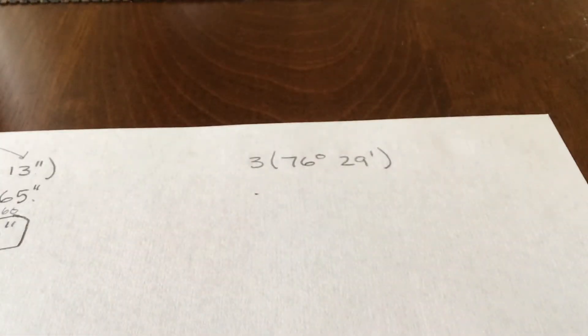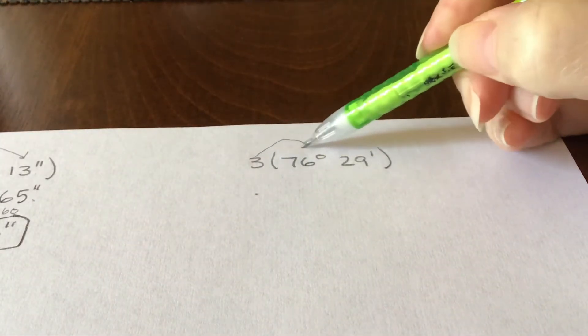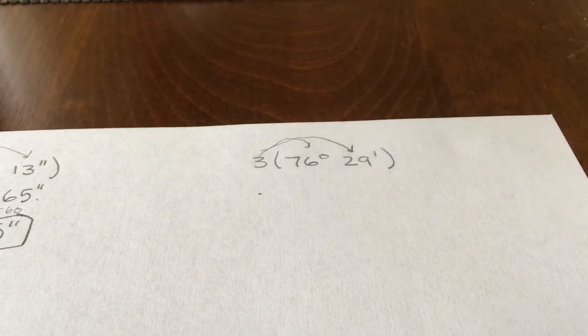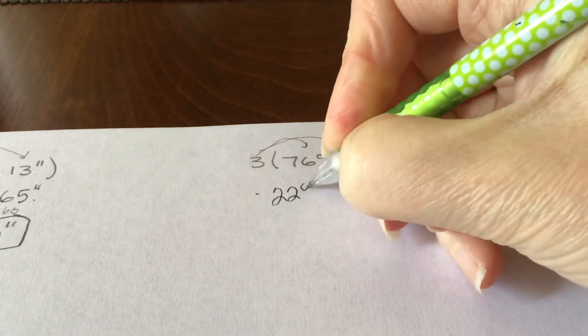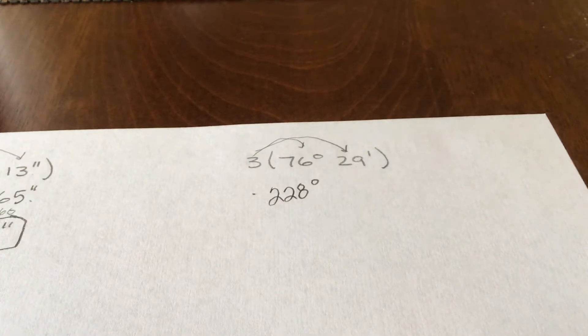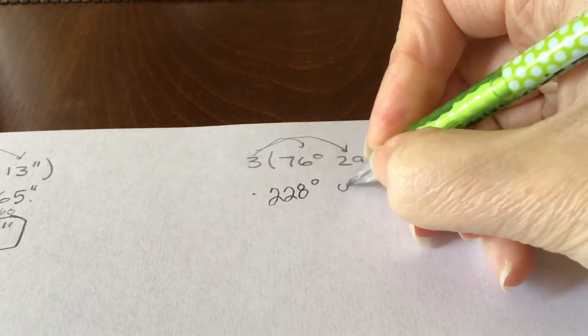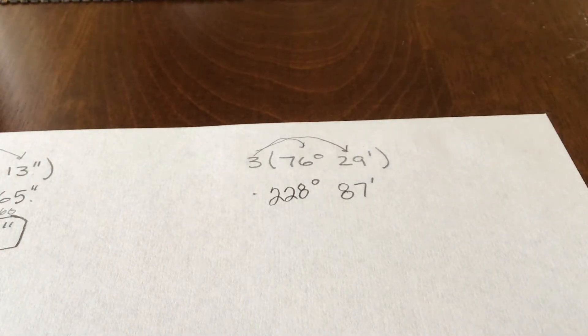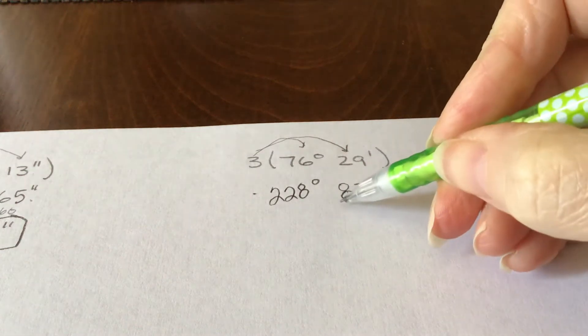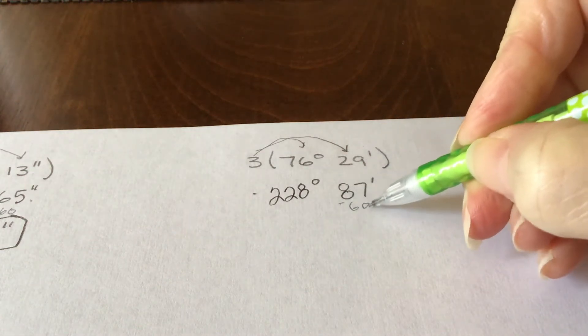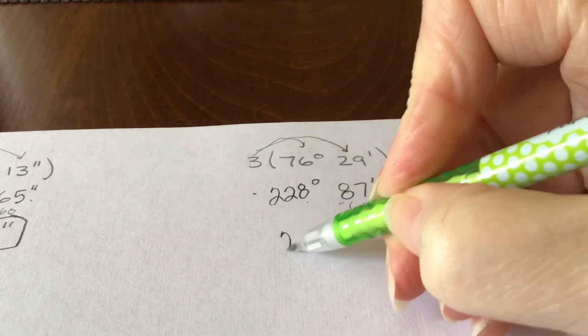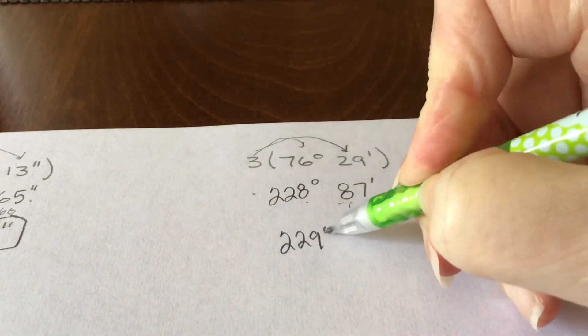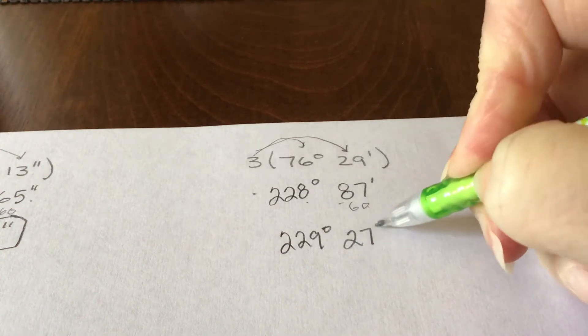All right, let's try another one of those. So this one just has a degree and a minute, but you do it the same way. So we're going to take 76 times 3 is 228. And then 29 times 3 is 87. And now we know, again, we know that those minutes are too large. So we would take 60 of them away, and it would make another degree. So our answer would be 229 degrees and 27 minutes.